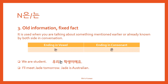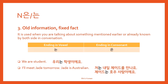And the second example: 'I will meet Jade tomorrow. And Jade is Australian.' So: 저는 내일 제이드를 만나요. You already mentioned Jade, so for the second sentence you use 은/는 because Jade is old information. So: 제이드는 호주 사람이에요.